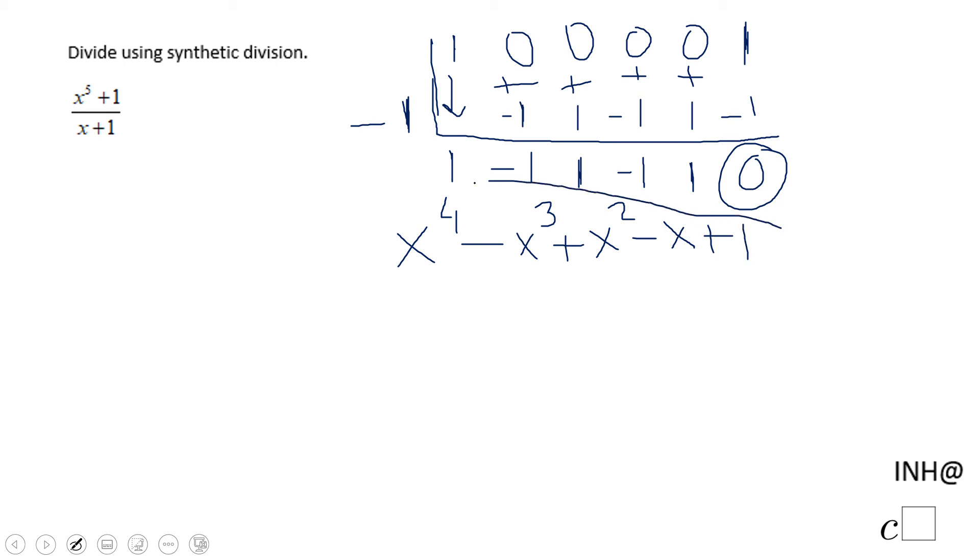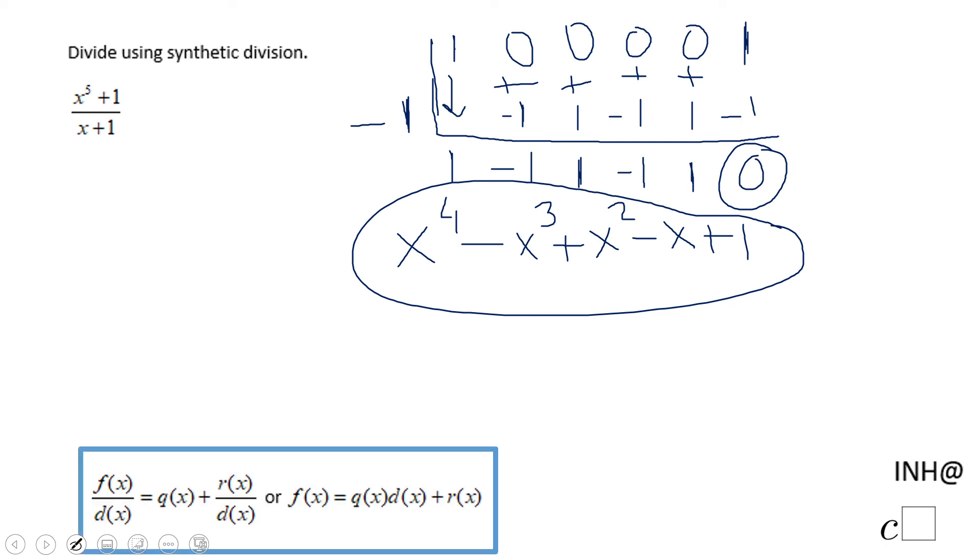This is the result of this division of these two binomials. The answer is q of x, the r of x is the remainder, which is zero. And that's it.